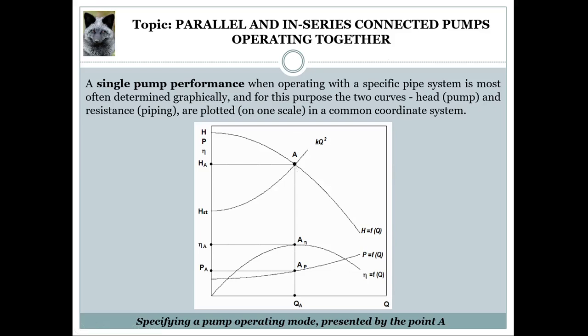Point A is known as the pump operating point and is used to specify the values of the pump operating parameters, such as pump flow rate presented by QA, pump head presented by HA, pump input power presented by PA, and the pump coefficient of efficiency presented by eta A. For a particular pump and relevant pipe system, there is only one operating point, meaning there will be just one flow rate — in this case QA — that can be ensured by the system.